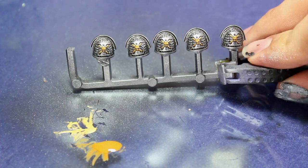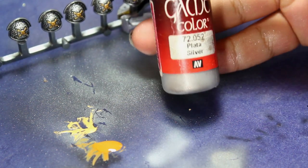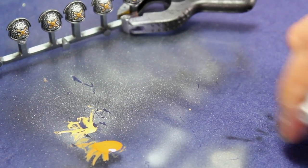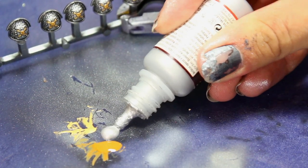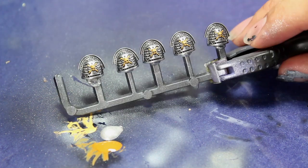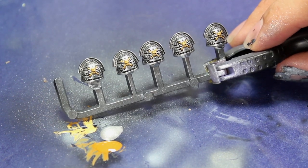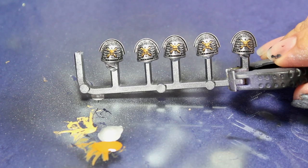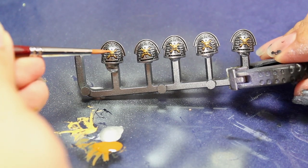Now that I have the skull and crossbones painted gold, I'm going back in with some Vallejo silver. I'm using this as an accent color for the gold. This is going to help make the gold look even more reflective, and I'm placing it mostly on the tip of each bone and on the forehead of the skull.